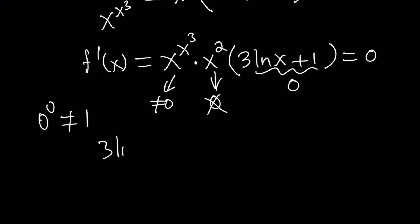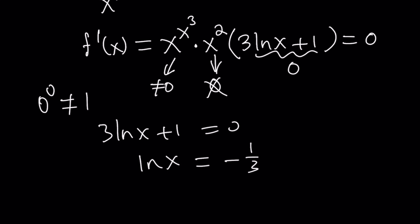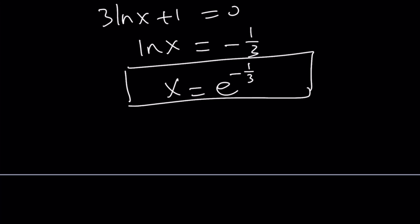Let's go ahead and do it. 3 ln x plus 1 equals 0. ln x equals negative 1 third. Since the base is e, that indicates x equals e to the power of negative 1 third as our critical point. So next, we're going to make a table and find out how our function behaves at that point.